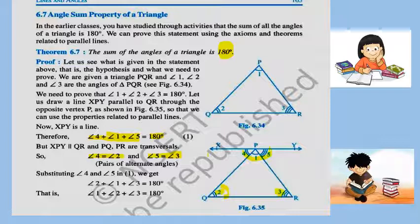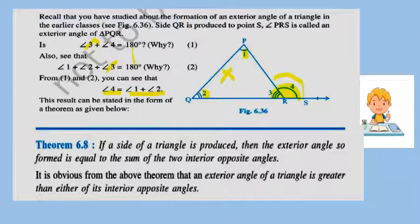So in this way, the theorem is based on the angle sum property of a triangle — the sum of all angles of a triangle is 180 degrees. The exterior angle of a triangle is formed when we produce, or extend, one side on one side. So here, if you see the figure, angle PRS is the exterior angle of triangle PQR.